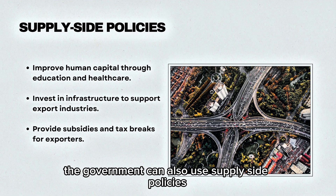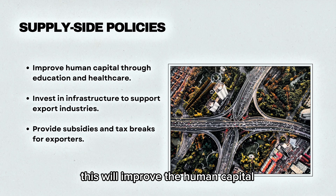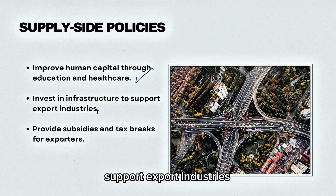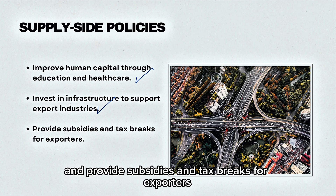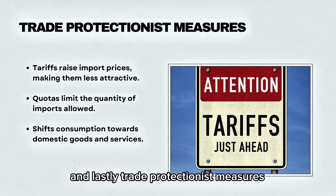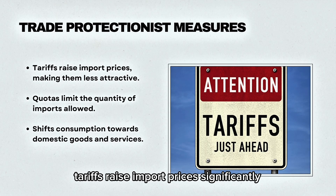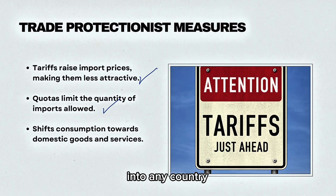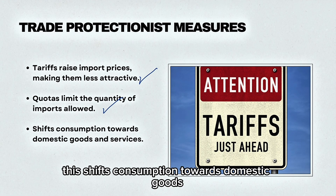The government can also use supply-side policies. This will improve human capital through education and healthcare, invest in infrastructure to support export industries, and provide subsidies and tax breaks for exporters. Lastly, trade protectionist measures: tariffs raise import prices significantly, making them less attractive, and the use of quotas will limit the quantity of imports allowed into a country, shifting consumption towards domestic goods and services.